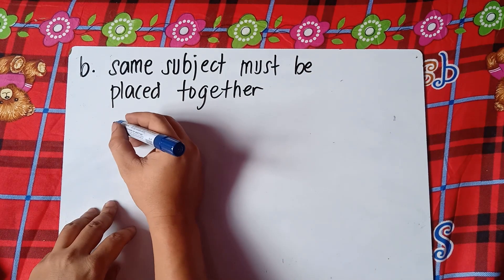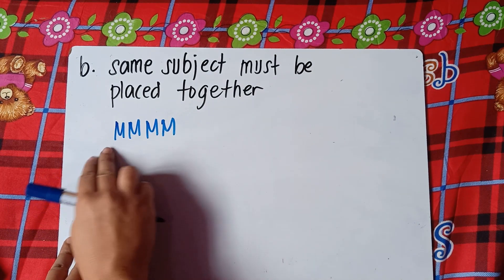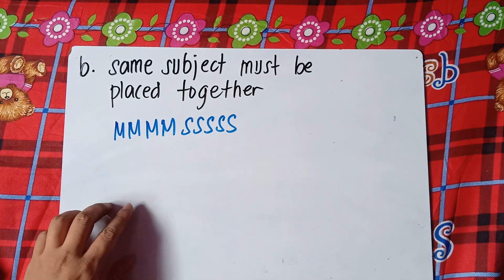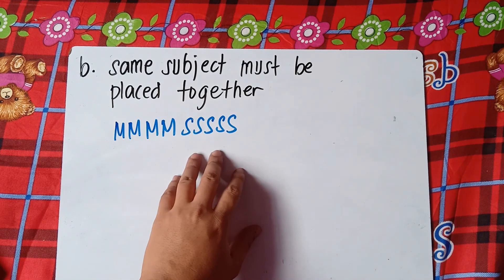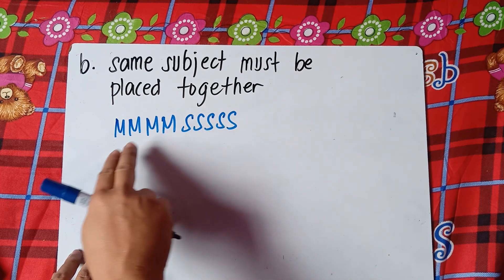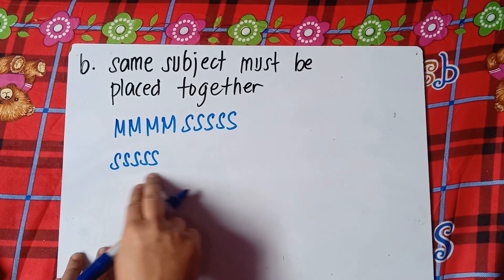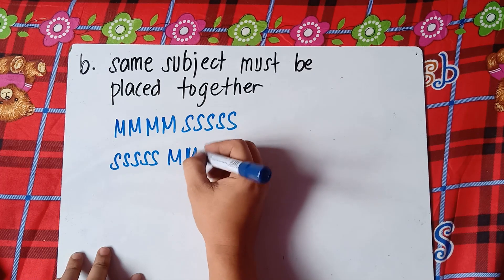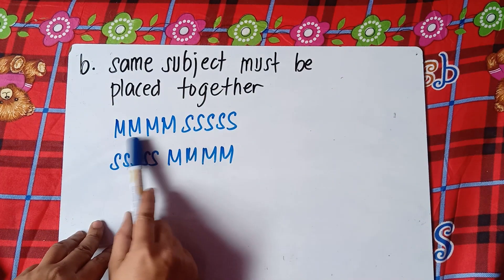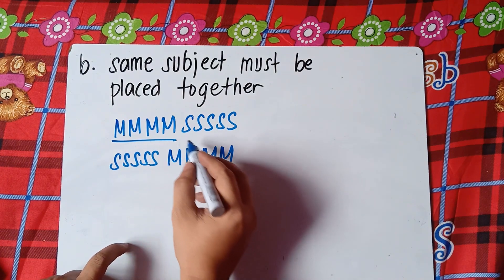Same subject must be placed together means you place the four mathematics books together and the five science books together. Do not forget that we can still arrange the order of the groups — science books can come first before math. So we have four ways to arrange math books and five ways to arrange the science books.